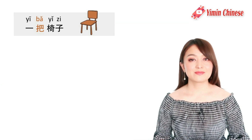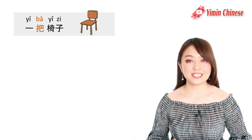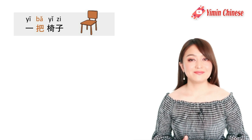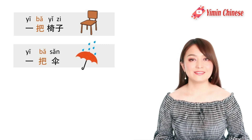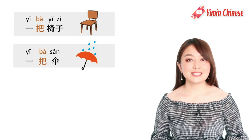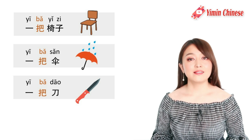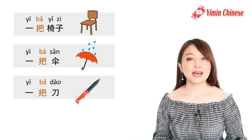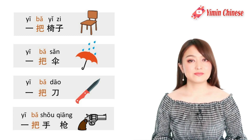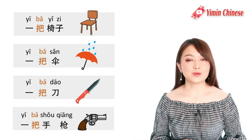Like 一把椅子, a chair, because we grasp the back of the chair; or 一把伞, an umbrella, which we hold by the handle; or 一把刀, a knife; or 一把手枪, a pistol, a gun.